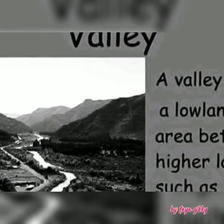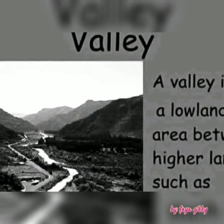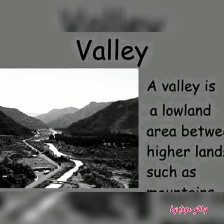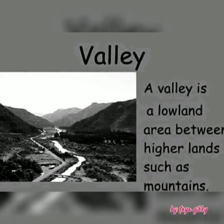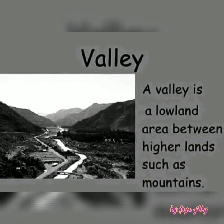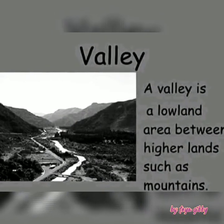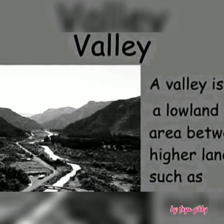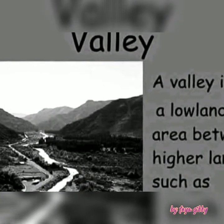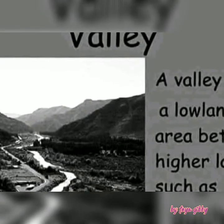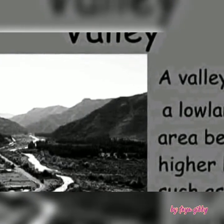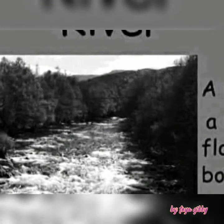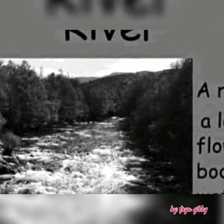We're going to focus on the second lowland, which is valley. A valley is a low, long area between two highlands. A valley can be between two mountains, two hills, or a mountain and a hill. Bear in mind that valleys usually slope down to the sea, a lake, or the ocean, and many valleys have rivers in them.